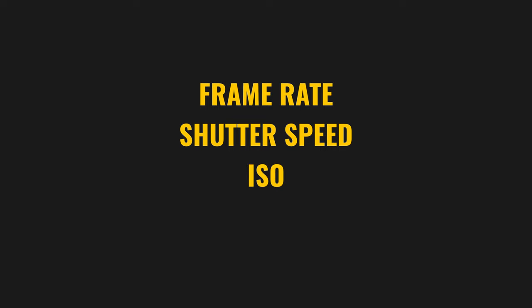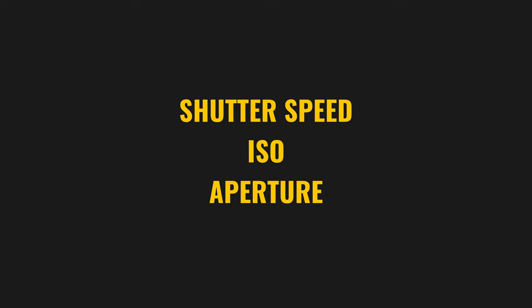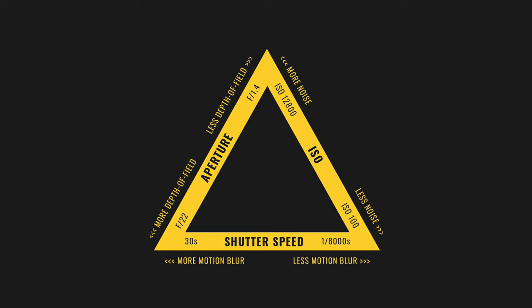So let's say you're shooting a video like I'm doing right now — there are four settings that are super important: frame rate, shutter speed, ISO, and aperture. Three of these settings also control exposure in both photography and video. Sometimes it's called the exposure triangle, meaning you can set and control the exposure by adjusting each of these three settings.